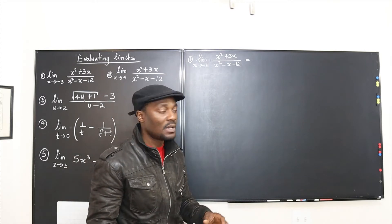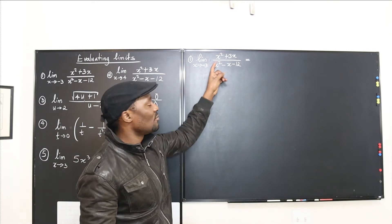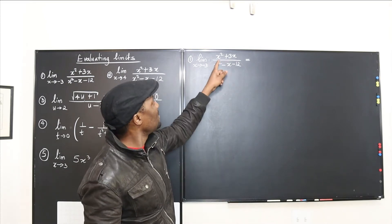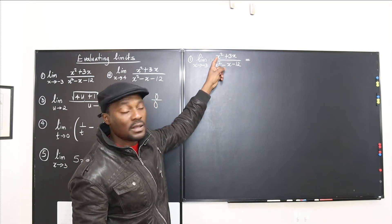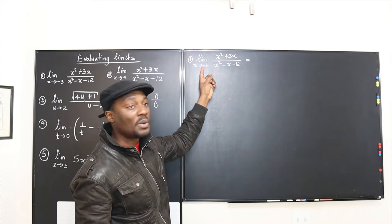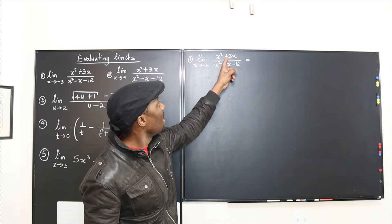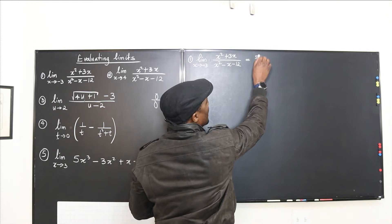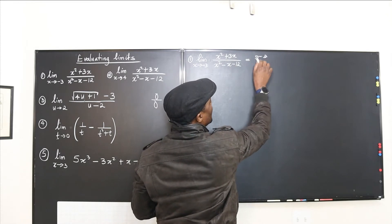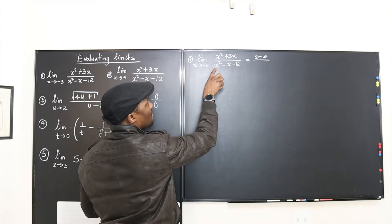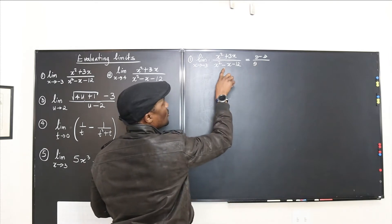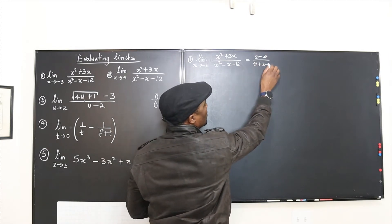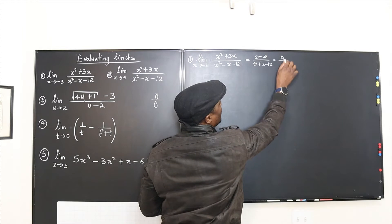Let's start with direct substitution — that's always the first thing to do. I'm going to plug in negative three. This gives me nine because squaring makes it positive. So nine minus three times negative three is minus nine, giving nine minus nine, divided by nine plus three, minus twelve. I end up with zero over zero.